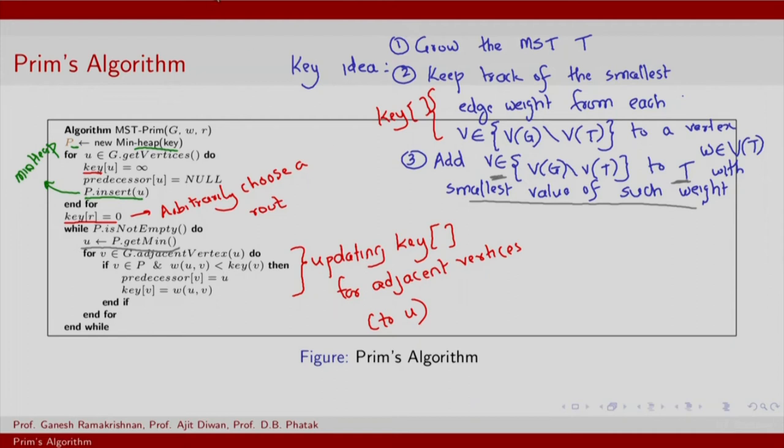You also do a small bookkeeping here through the predecessor. The predecessor array is what gives you access to the edges that are included in the minimum spanning tree. For all u, v such that predecessor of u is v or predecessor of v is u, edge uv will belong to the edge set of T.